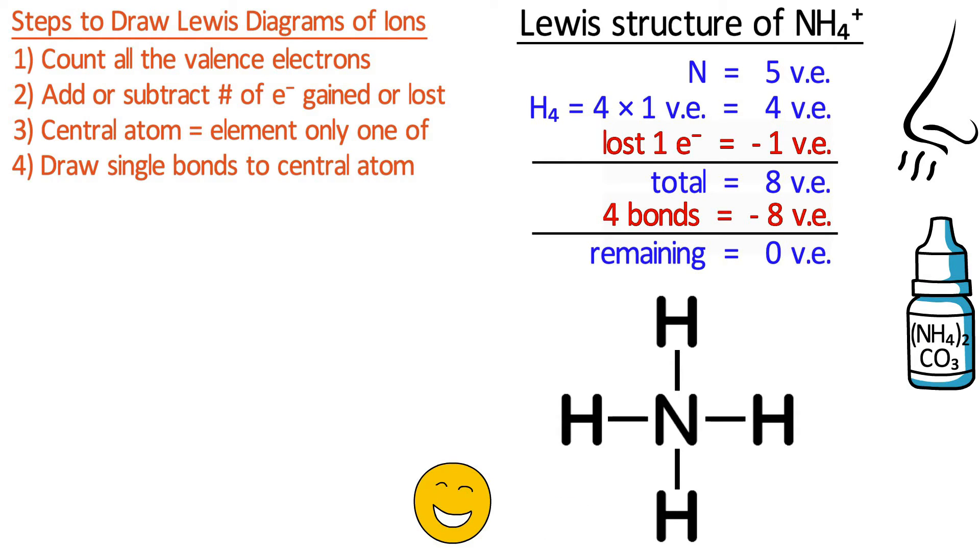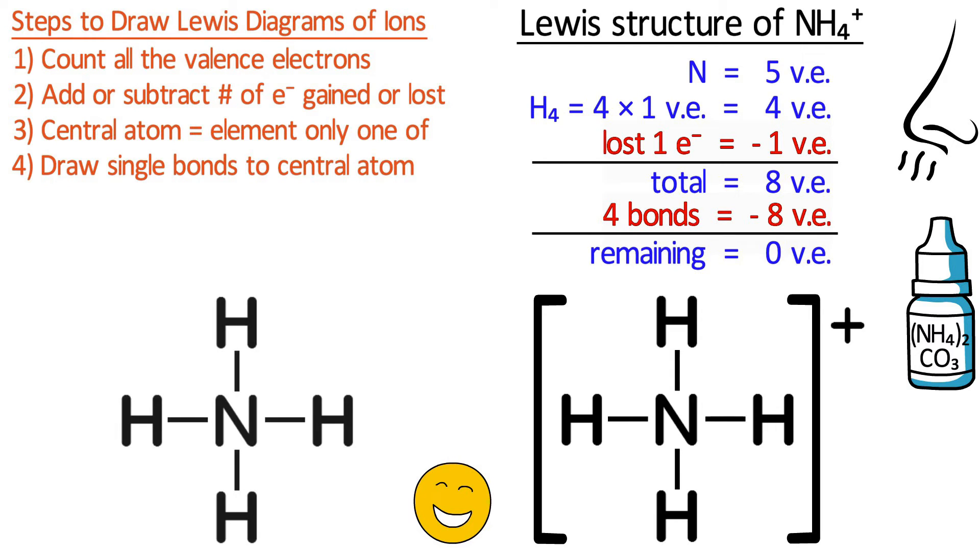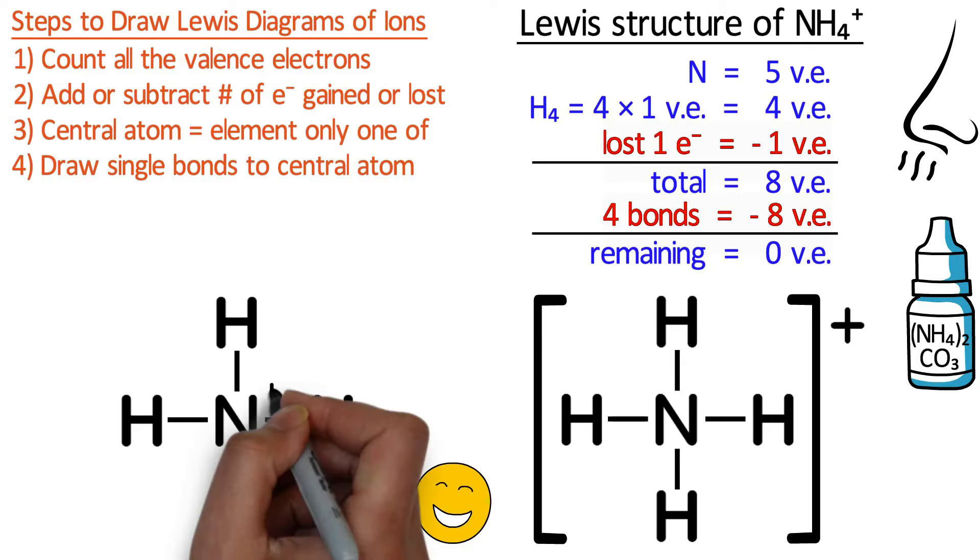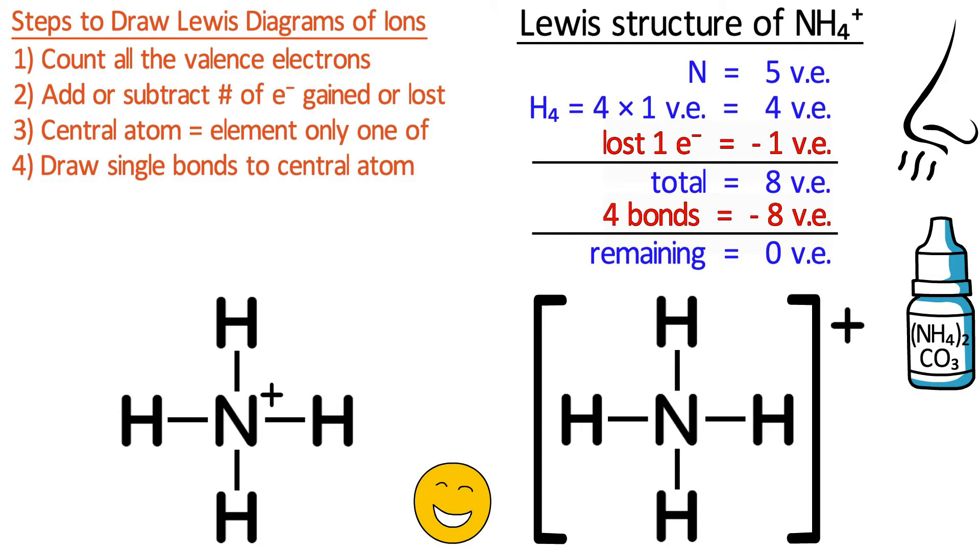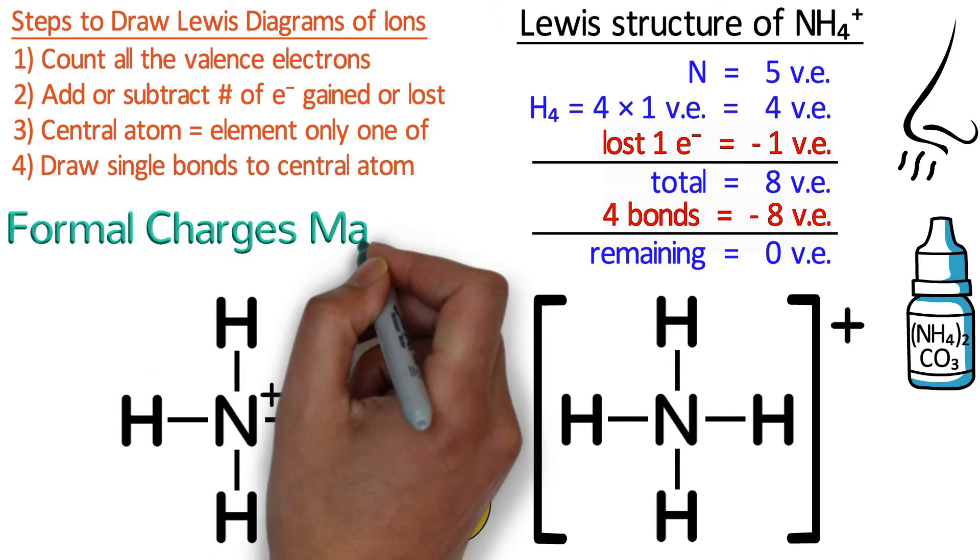To indicate that this is a polyatomic ion, the entire structure can be put inside square brackets and the charge is written at the top right. Sometimes the square brackets are omitted. In that case, the charge is typically written next to the atom or atoms with non-zero formal charge. If you would like to know more about that, be sure to check out my video, Formal Charges Made Easy.